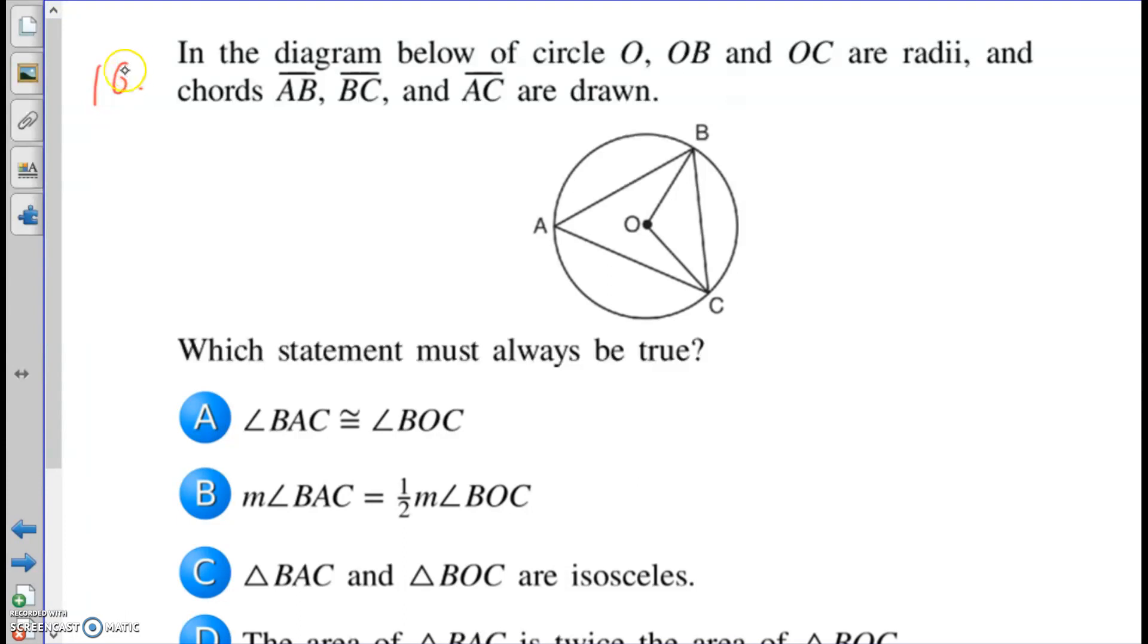Number 10. In the diagram below of circle O, OB and OC are radii and of course all radii are congruent. Chords AB, BC, and AC are drawn. Which statement must always be true? Alright. So angle BAC is congruent to angle BOC. Well, that's not true at all.